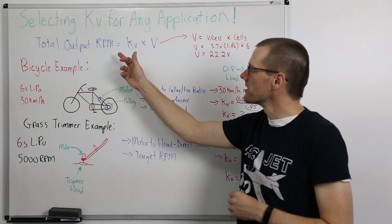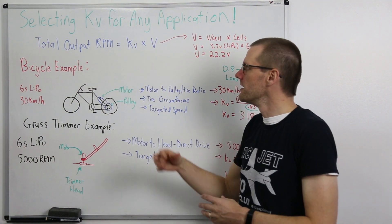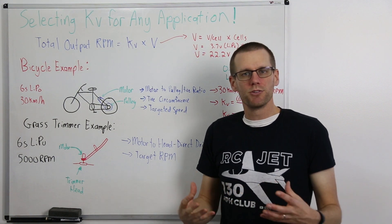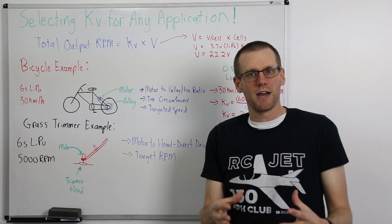Essentially, the equation looks like this. The total amount of RPM that we're going to get out of that motor is equal to that KV value multiplied by the voltage that you're inputting to that system or more specifically that motor.